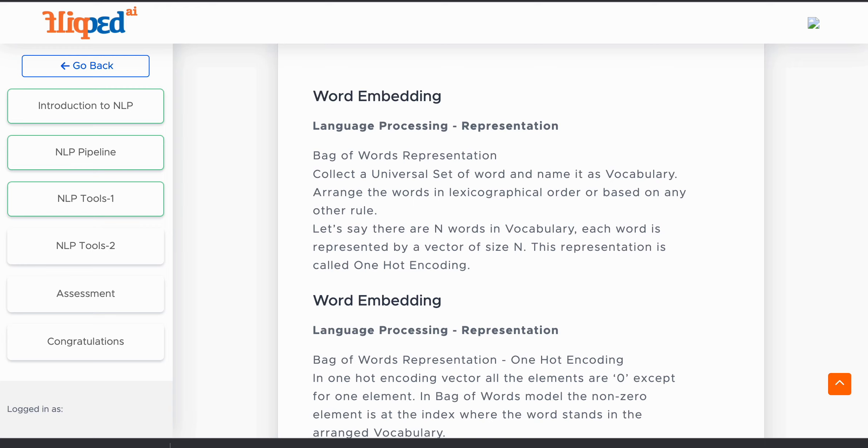We start searching for the section containing the words starting with the first letter of the desired word. From that section, we search for the words that contain the second letter of the desired word, and so on. Let's say there are N words in vocabulary. Each word is represented by a vector of size N.